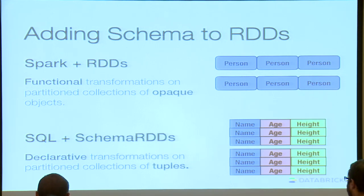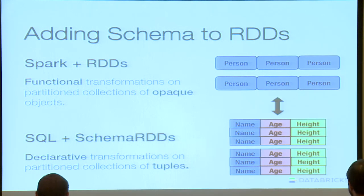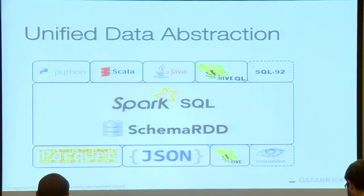Because of this extra schema information, we can turn these objects into tuples. And this isn't an either-or proposition — you can actually go back and forth between RDDs and schema RDDs. The way we're viewing this is as a unified abstraction for working with data.